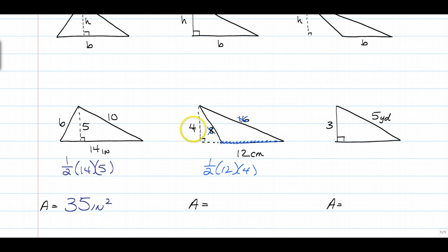Again, don't worry about it. And 12 does not include this dashed line. It's only the actual base. So half the base times height is going to give you 24 centimeters squared.